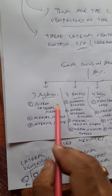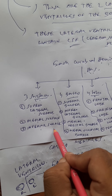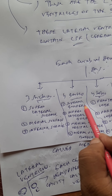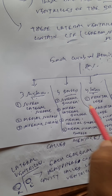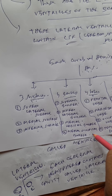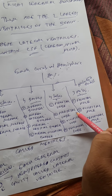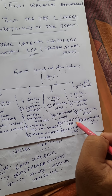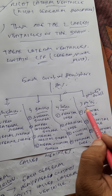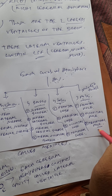To summarize: each cerebral hemisphere has three surfaces — superolateral, medial, and inferior; four borders — superior, inferolateral, medial orbital, and medial occipital; four lobes — frontal, parietal, occipital, and temporal; and three poles — frontal, occipital, and temporal.